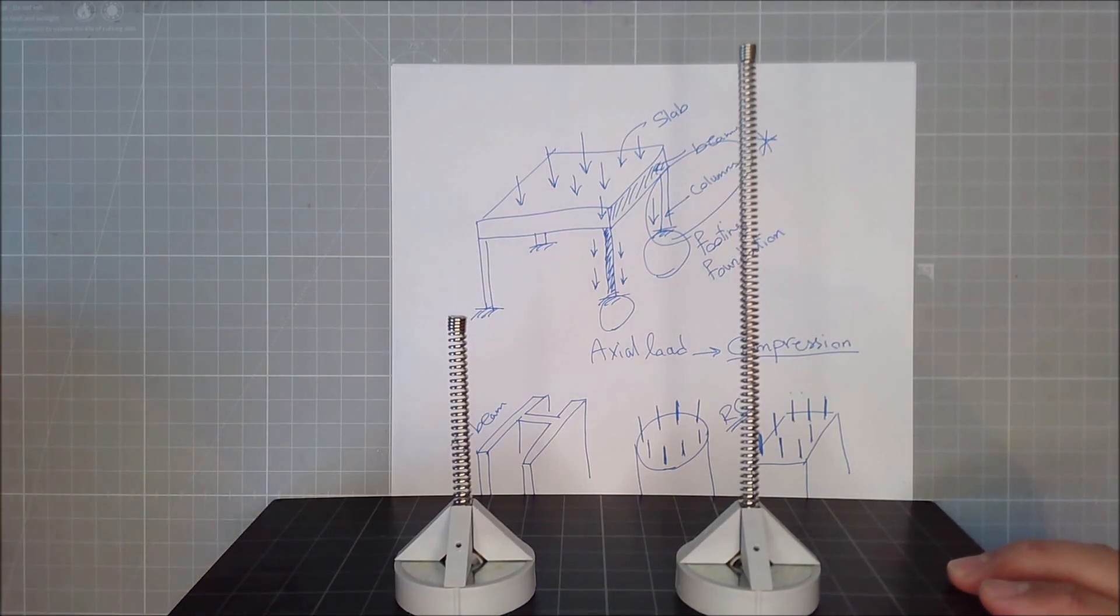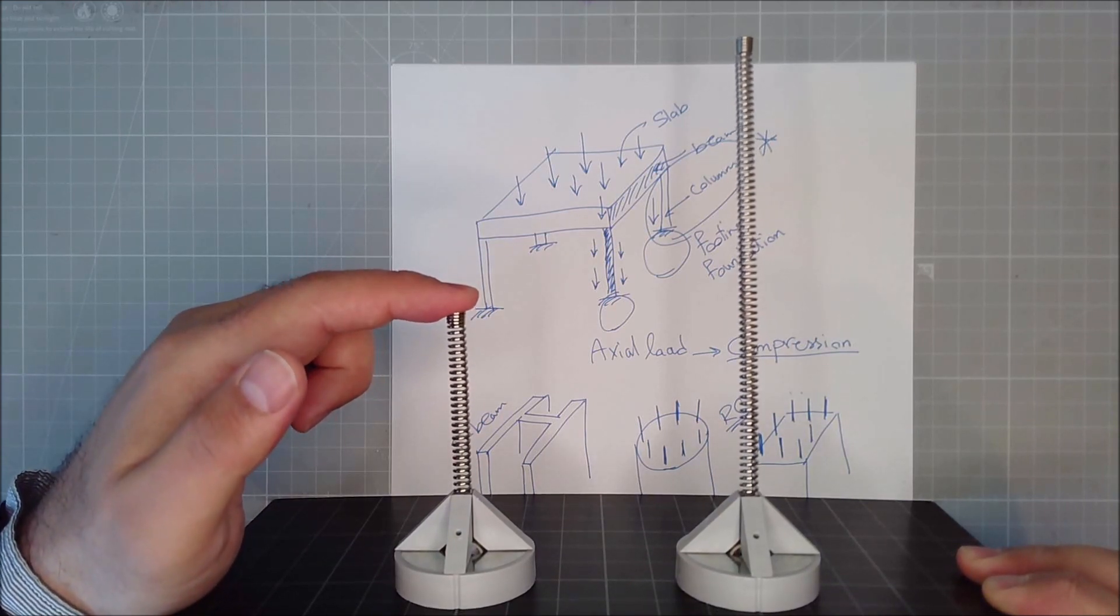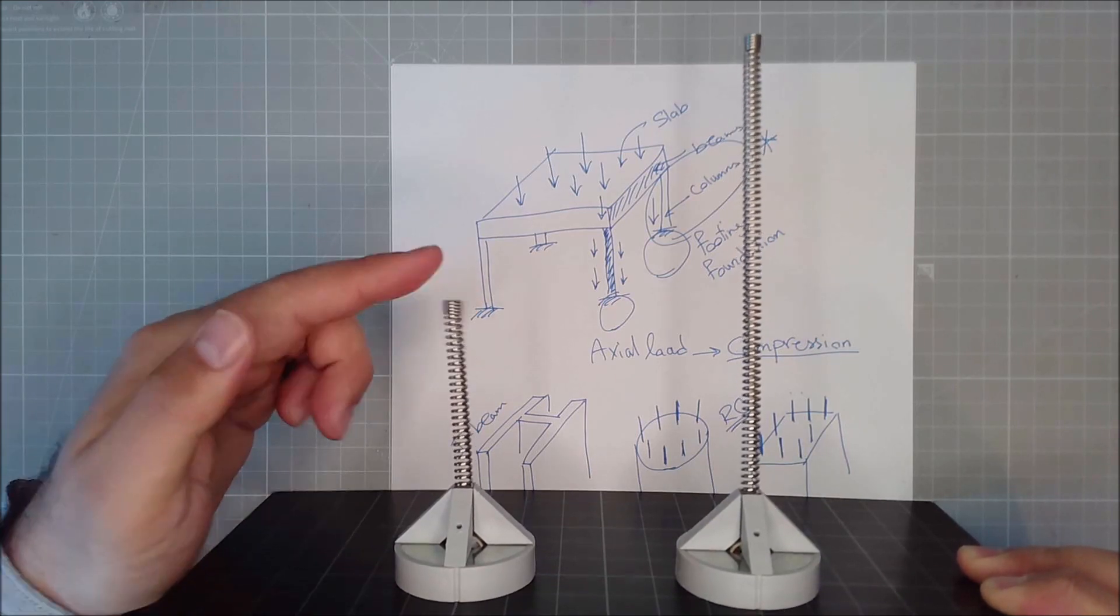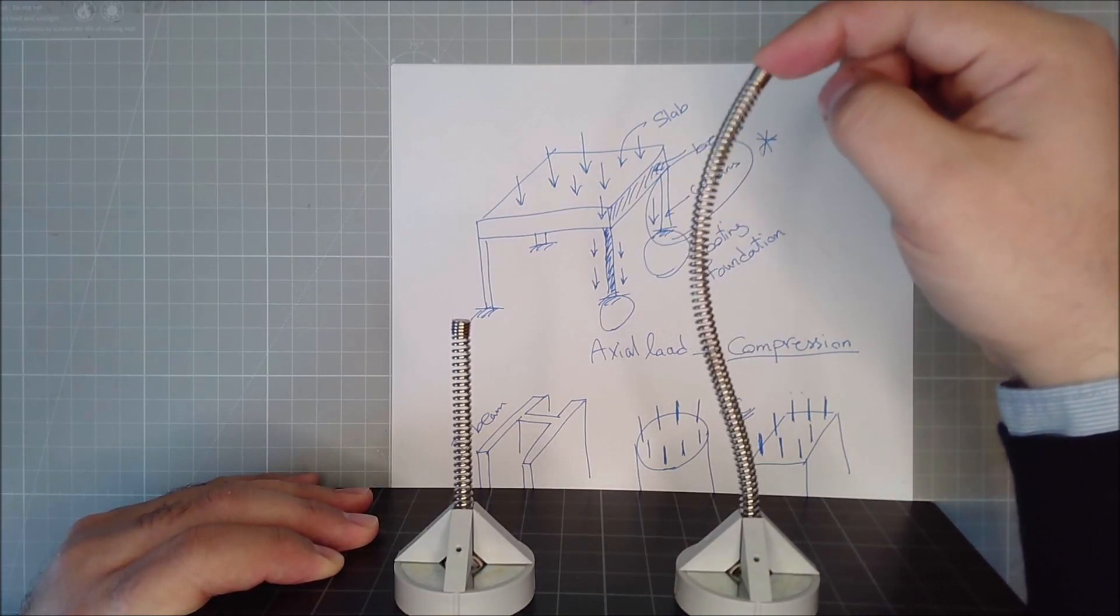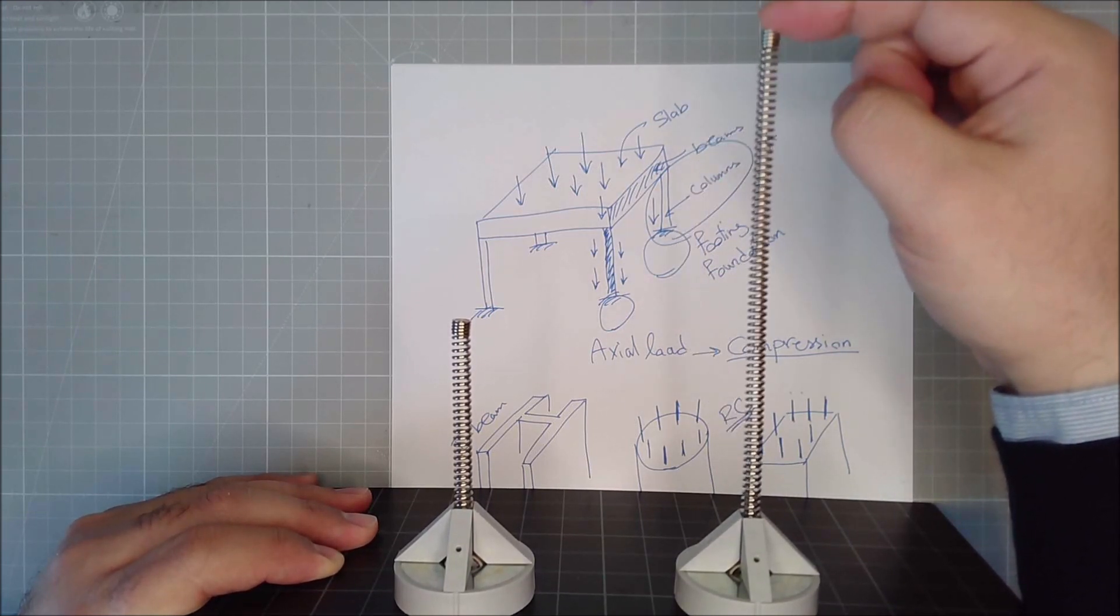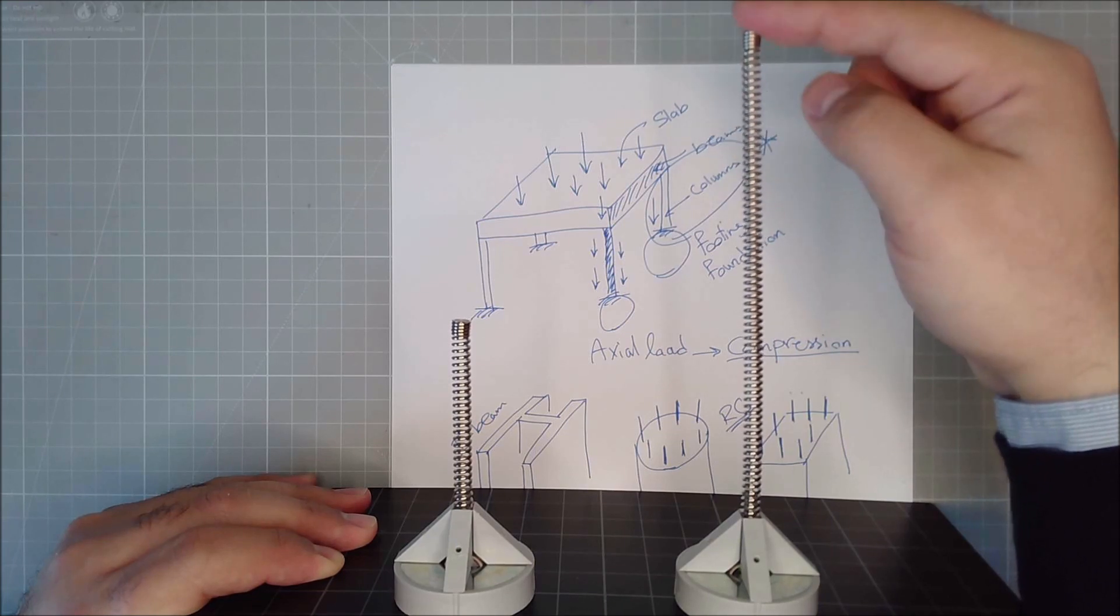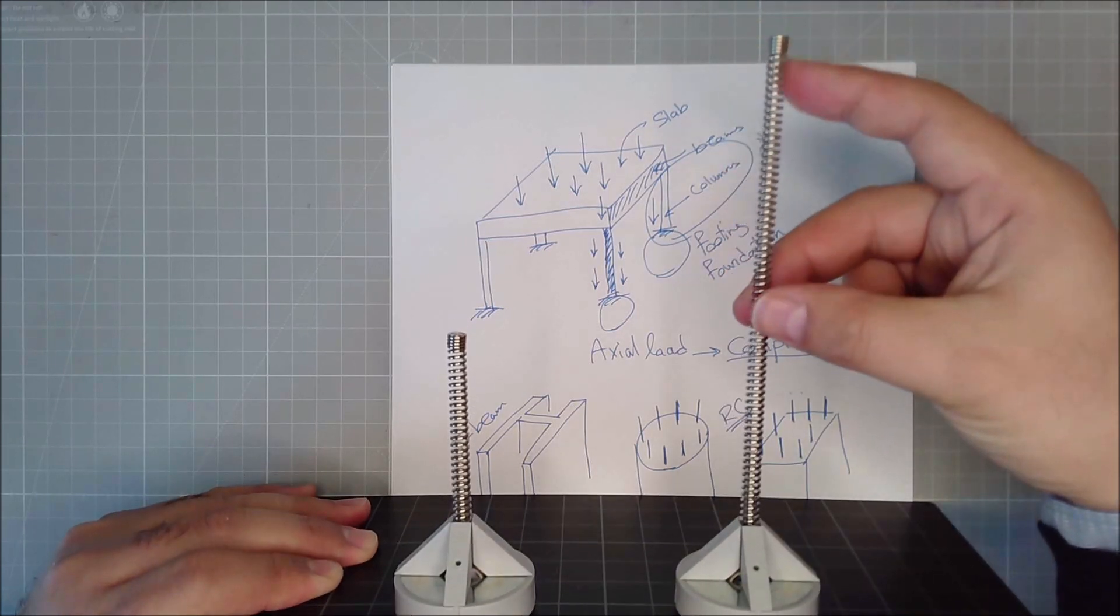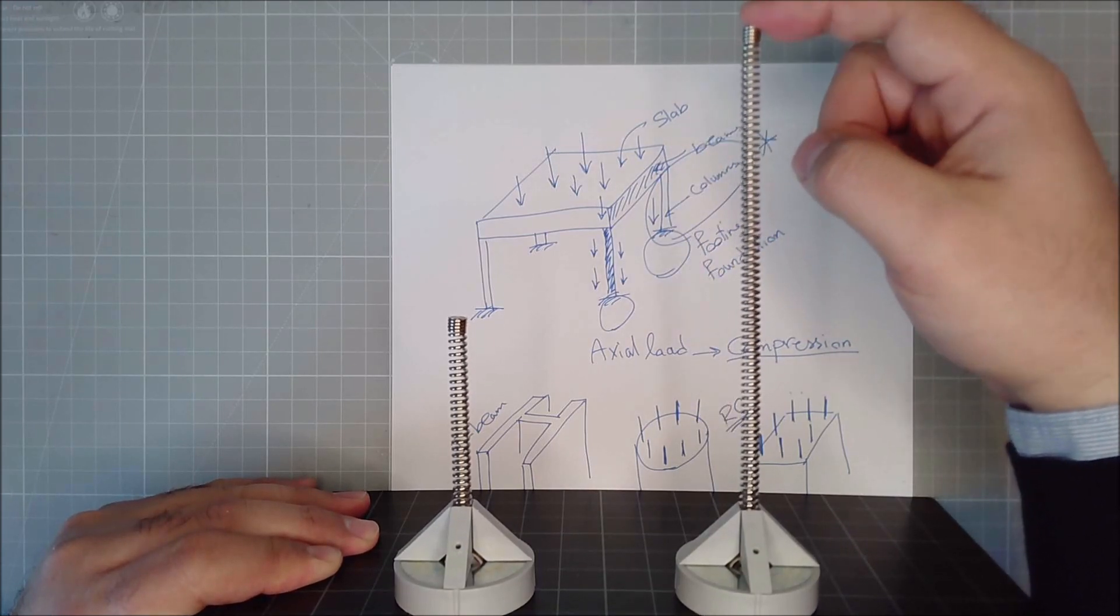Now, look what happens when I apply compression to them. I'm applying compression to this guy, and you see, it really doesn't do anything, it just moves up and down. But what happens when I apply compression to a long and slender column? Look, it bends suddenly, it has a lateral deflection in the horizontal direction. Is it still in elastic state? Yes, because when I remove my loading, it goes back to its initial length and its initial state. So, I haven't caused any yielding in it, it has not reached the yielding.